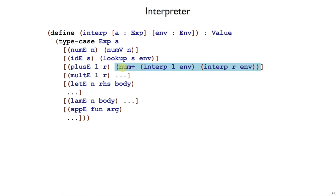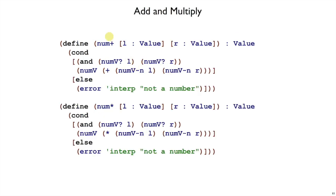So what we're going to do instead is write our own function num plus. Num plus is the plus for curly that takes values instead of numbers. Give me a left value and give me a right value. As long as both of those things are numbers, then I can extract the numbers out of the numVs, add them up, and then put it back into a new numV so that I'm returning a value.